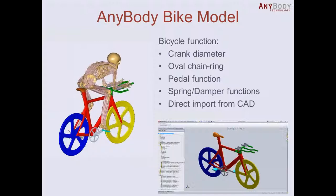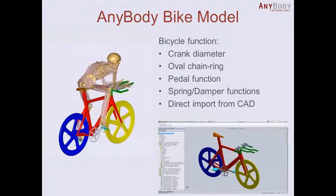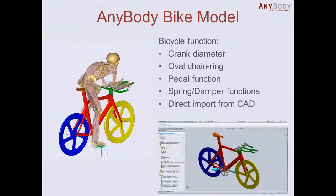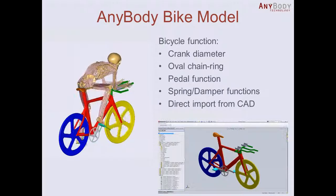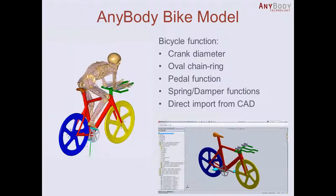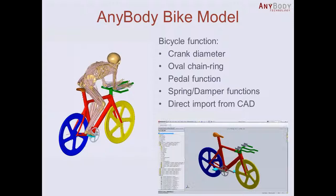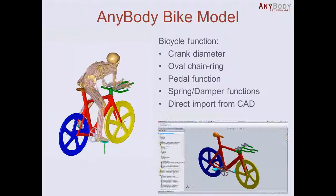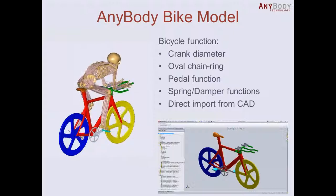In SolidWorks, for example, you can change the crank diameter — whether you have a compact crank or a traditional crank. Also very interesting for time trial bikes is whether you have an oval chainring or a normal circular chainring. You can look at different pedal functions, and you could introduce spring or damper functions. Basically, whatever you can do in your CAD model, you can analyze it later on in AnyBody.